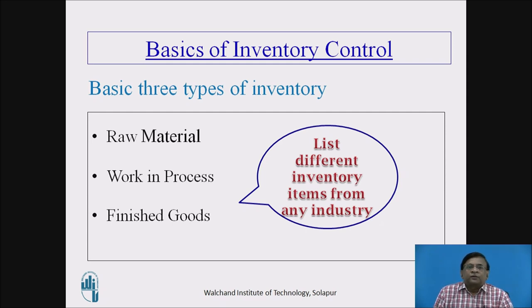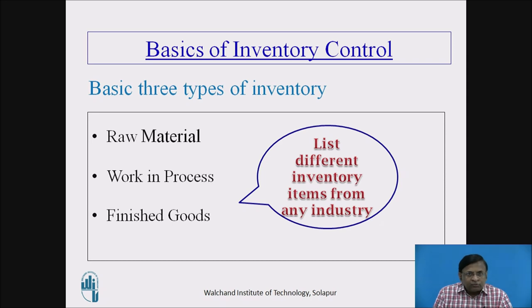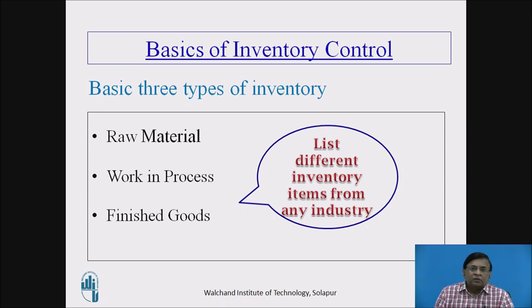Coming to the types of inventory, again I mention specifically here, we are focusing only on manufactured goods. We are thinking about manufacturing industries and inventory items for such industries only. With this, we can classify inventory into three types: raw material, work in process, and finished goods.